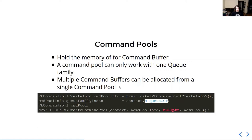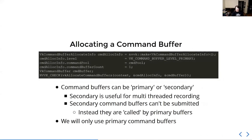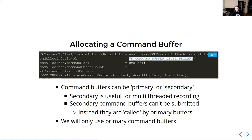You can allocate multiple command buffers from a command pool — for a large game engine or renderer you might do that. For our purposes, we only need one command buffer and one command pool. To allocate our command buffer, we call vkAllocateCommandBuffers — we can allocate multiple but we just specify one. There's this level parameter — command buffer level primary. A command buffer can be either primary or secondary.